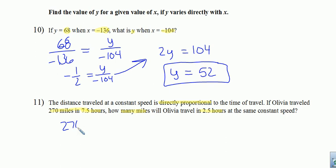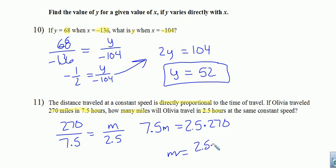Let's go ahead and say miles divided by hours is the same as miles, which we don't know, divided by hours. And again, let's cross-multiply. So 7.5m, 7.5 times m is 7.5m. 7.5m would equal 2.5 times 270. And then to isolate m, we would divide by 7.5. So 2.5 times 270 divided by 7.5 is the same as 90. There we go.